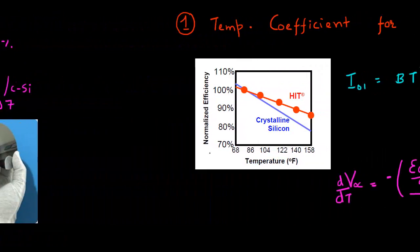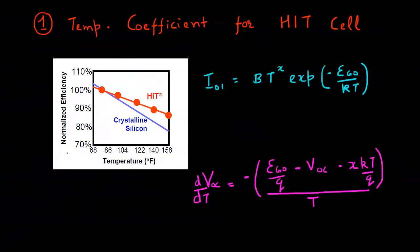In this video, I want to mention some of the unique features which this HIT cell has. One unique feature which is often publicized by Sanyo, or now Panasonic which acquired Sanyo, is the low temperature coefficient for this HIT cell. In one of the previous videos, I described that the efficiencies of solar cells fall as a function of temperature. When you increase the temperature, your efficiency typically falls.